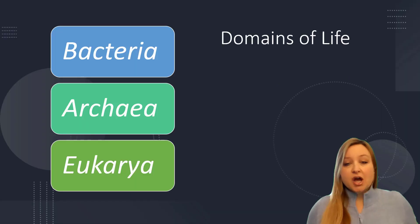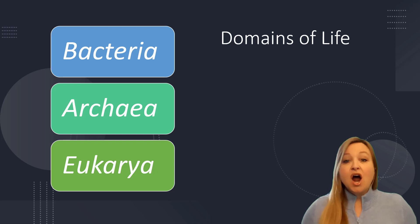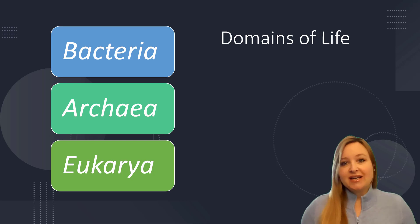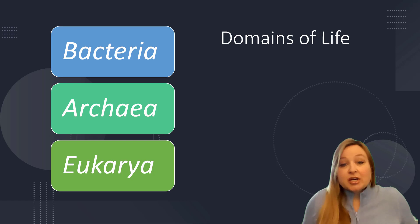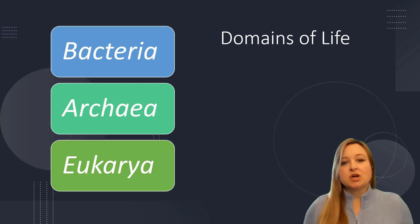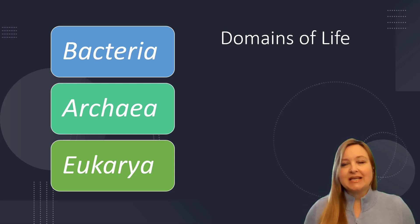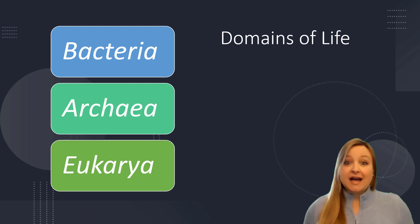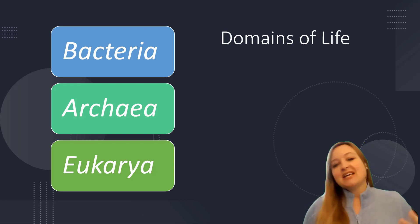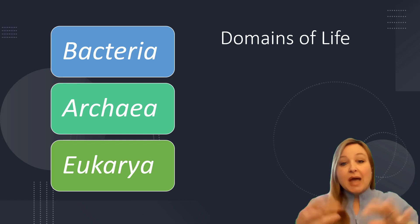When we're talking about living things, there are three domains of life: bacteria, archaea, and eukarya. When we talk about domains, we're talking about this taxonomical classification. Domain, kingdom, phylum, class, order, family, genus, species — and domain is the highest level.